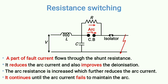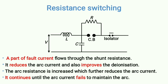The cycle continues until the arc current is too low to maintain the arc, and the arc is completely vanished. At that point, the entire current flows through the shunt resistance and the circuit breaker contacts are separated with no arcing. However, fault current is still flowing through the resistance, so we use an external isolator to disconnect it, completely eliminating the fault. This is how resistance switching prevents current chopping.